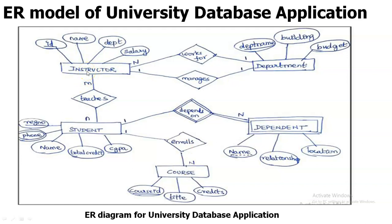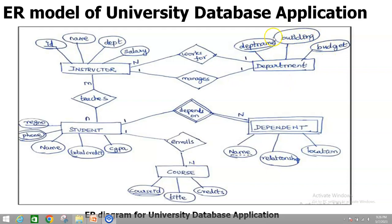For each entity set, there are attributes. For instructor, the attributes are ID, name, department, and salary — where ID is underlined, meaning it is the primary key. For student, the attributes are register number, phone, name, total credit, and CGPA — where register number is the primary key, and phone number is represented as double oval, meaning it is a multi-valued attribute. For department: department name, building, and budget, with department name as primary key. Dependent is represented with a double rectangle, meaning it is a weak entity, with attributes name, relationship, and location — name being the primary key. For course: course ID, title, and credit, with course ID as primary key.